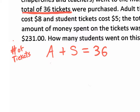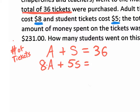Now we create an equation based on money. If you ever see a money symbol, you have to make an equation based on money. An adult ticket costs $8, so we put 8 times each adult — that's 8A. A student ticket costs $5, so we put 5S. Together: 8A + 5S = 231, because the total amount spent was $231. That is your money equation.